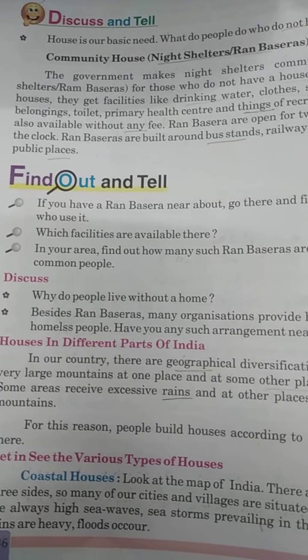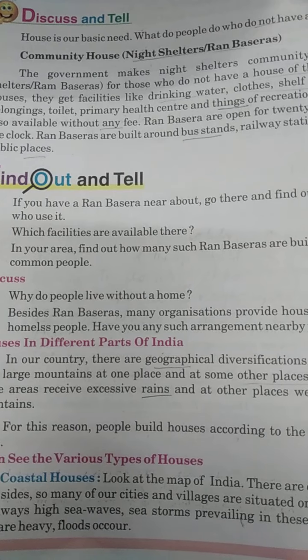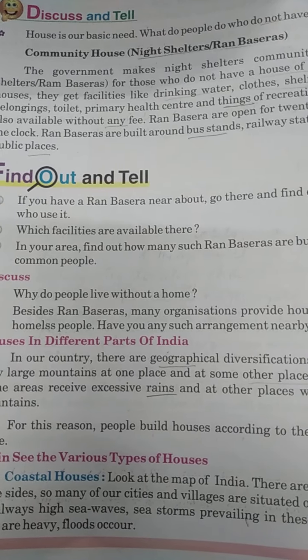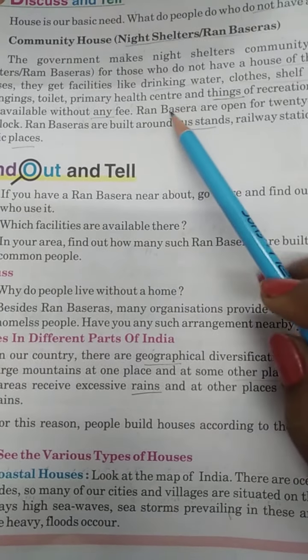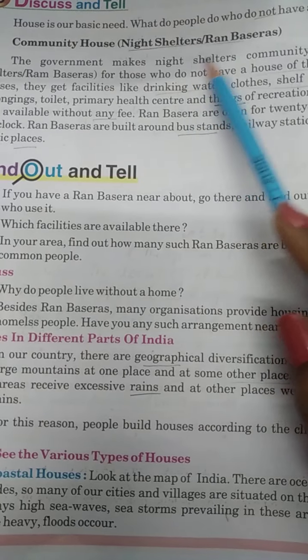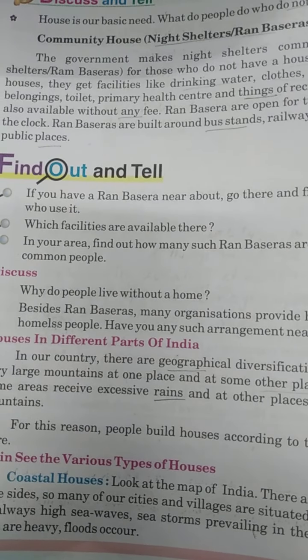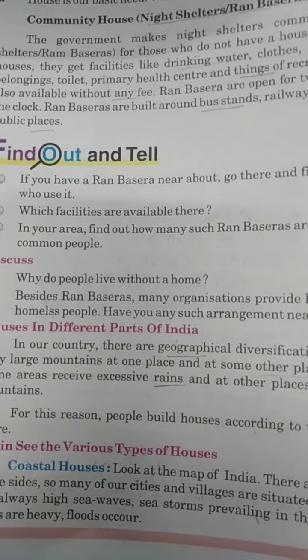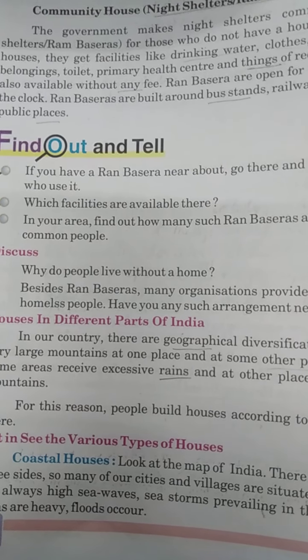Good morning, friends. In our previous class, we studied about different types of houses found in Rajasthan, about the community house, and about the rain basera. We also studied that government buildings are built by the Rajasthan Housing Board in Rajasthan. Let's continue with the remaining part of this chapter.